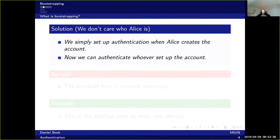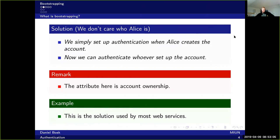One possible solution is that we simply don't care who Alice is. We set up authentication when Alice creates her account and then we authenticate whoever set up the account. We don't care that Alice is Alice — we just care that it's the same person coming back for later sessions. In this scenario the attribute is ownership, not a particular physical identity, and this is the solution you are most familiar with from a lot of web services.